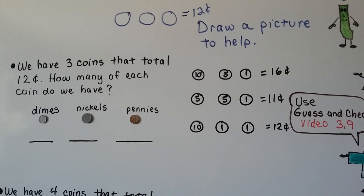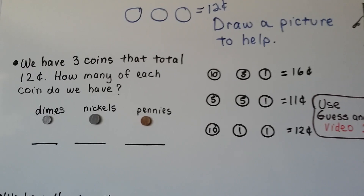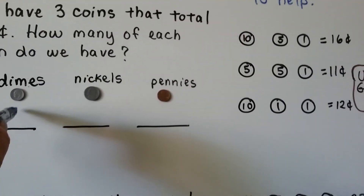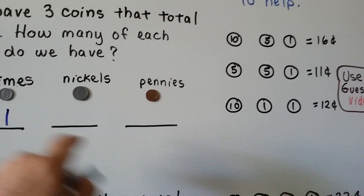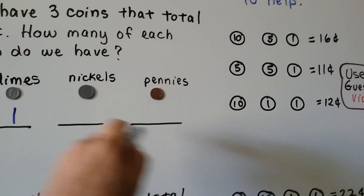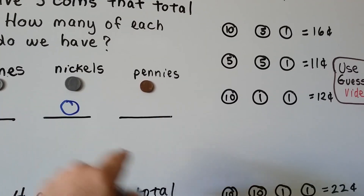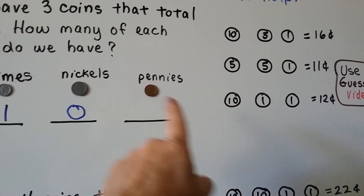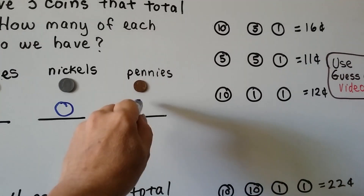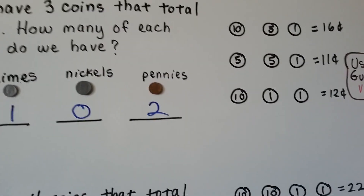So we found three coins that equals twelve cents. How many dimes did we use? One. How many nickels did we use? None — we have zero. How many pennies? Two.